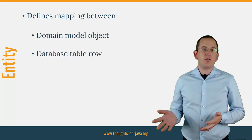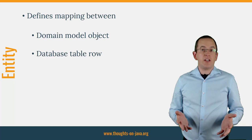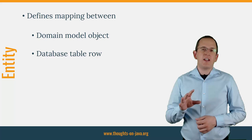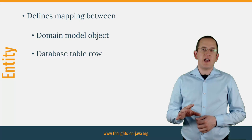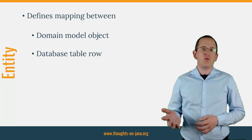Nowadays, you use annotations to define these mappings. That provides the benefit that your class and attribute definitions are in the same place as your mapping definitions, making it a lot easier to read and understand. You can also define the same mapping information in an XML file, though this approach is only rarely used. Just keep in mind that it provides an alternative to annotations when you are unable to annotate your entities or need to overwrite the mapping information.